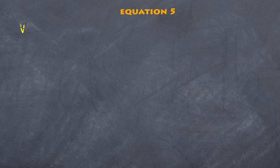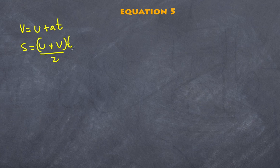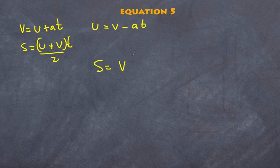Equation number five is very similar to equation four. Starting again with V = U + AT and S = (U + V)/2 × T, this time instead of substituting for V, I rearrange to get U = V − AT and substitute that in. I get S = VT − ½AT². That is equation number five. It allows me to determine any of the variables as long as I have three of them.